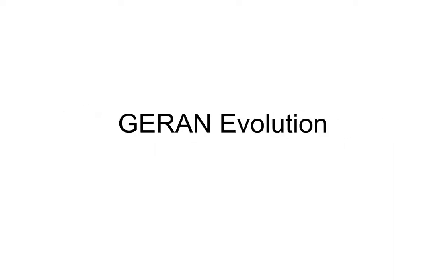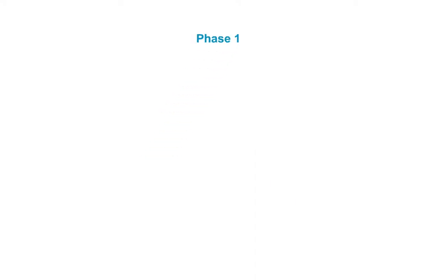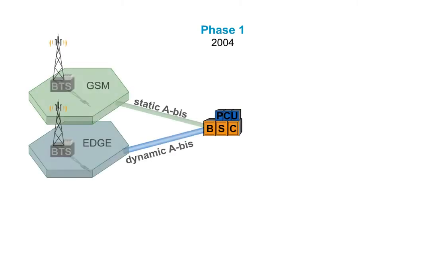GERAN evolution can be introduced in two phases. Phase 1, planned for 2004, can be implemented with the use of existing BSCs in the network.